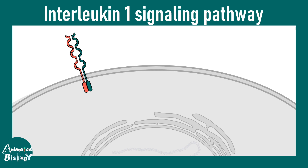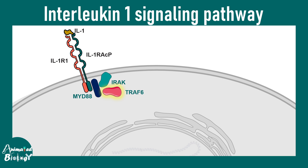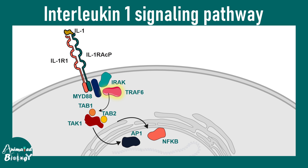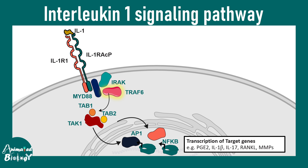The signaling cascade underlying interleukin 1 works as follows: interleukin 1 beta binds to the IL-1R/IL-1RACP heterodimer, then binds to adaptor proteins such as MYD88, which activates downstream kinases including TRAF6 — TNF receptor associated factor. This ultimately activates the TAK1 kinase cascade, leading to activation of the MAP kinase pathway and the AP1 transcription factor family, or NF-kappa B. This results in transcription of genes encoding prostaglandins, interleukins, IL-17, RANKL, and matrix metalloproteinases.